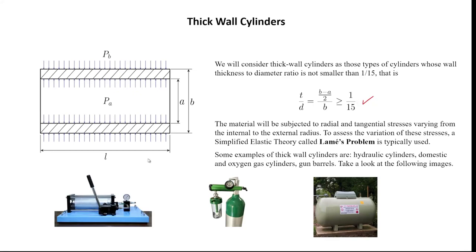Here you have three pictures. For example, you have a hydraulic cylinder, which is widely used in industry for maintenance, installation, removing or mounting equipment, and alignment. You also use hydraulic cylinders to lift a car if you want to change a tire — sometimes we use a hydraulic jack mechanism for that.